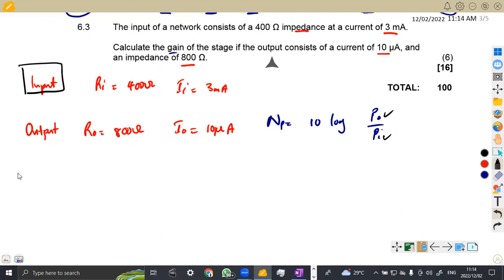From the input, let's have the input power. The input power is going to be current squared times resistance. We are given current and resistance. We know that current squared times resistance gives us the power. I'm just going to insert the values. Our current is 3 milliamps. Remember milli means times 10 to the power of minus 3. So it's going to be 3 times 10 to the power of minus 3 squared times the resistance, which is 400 ohms.